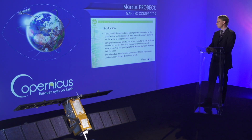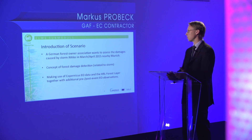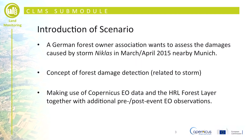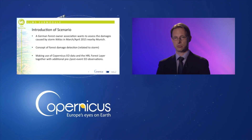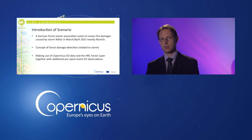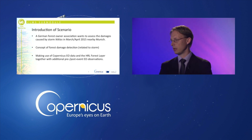This module will provide an example of how a storm damage assessment could look in a concrete case. Let's assume a forest owner association in Germany wants to assess damages caused by a significant storm. There was a storm damage event in 2015 in Germany, south of Munich — the storm was called Niklas, it came in March-April 2015, and it caused severe damages in the forests.